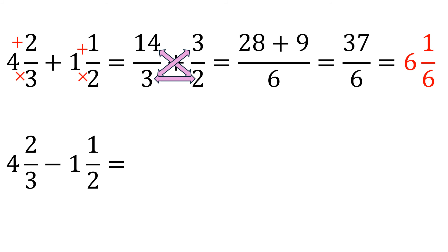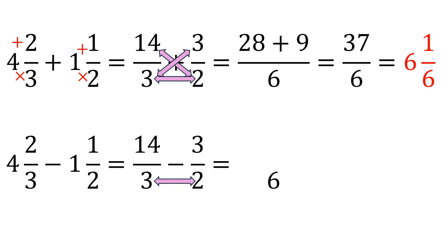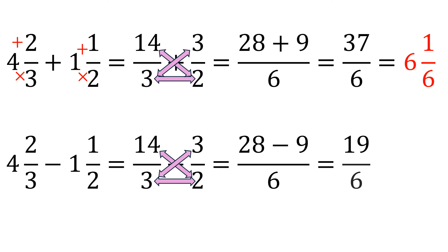For subtraction with two mixed numbers, do the same procedure — change both terms into improper form. Multiply the denominators: three times two is six. Cross-multiply: fourteen times two is twenty-eight, copy the minus, three times three is nine. Subtract the top: twenty-eight minus nine is nineteen, then copy the denominator six. It's an improper fraction, so change it to mixed form: nineteen over six is three and one-sixth.